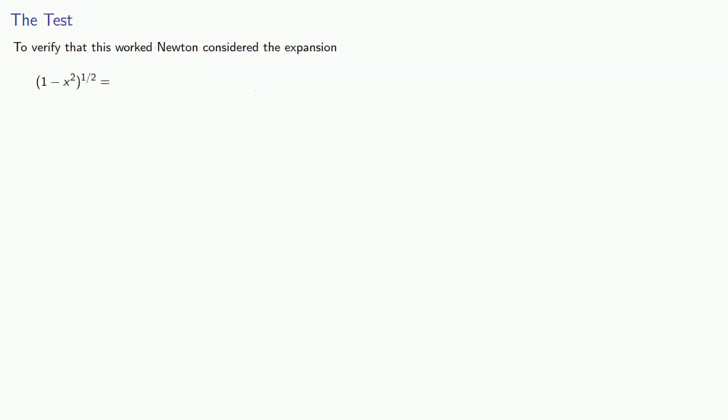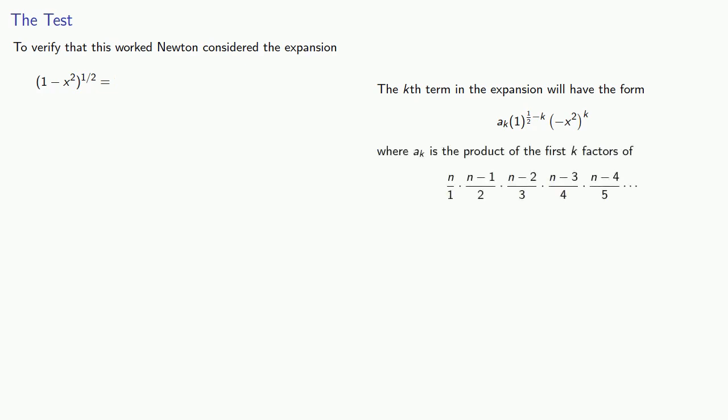To verify this worked, Newton considered the expansion of (1 - x²)^(1/2). So the kth term in the expansion will have the form a_k(1)^(1/2 - k)(-x²)^k, where a_k is the product of the first k factors of this thing, starting with k = 0. Now for n = 1/2 and k = 0, we define our first coefficient to be a_0 = 1. And so our first term is 1, the coefficient, (1)^(1/2 - 0)(-x²)^0 or 1.